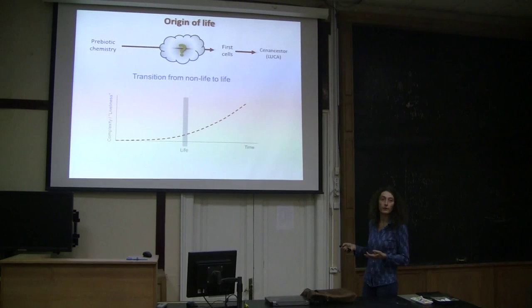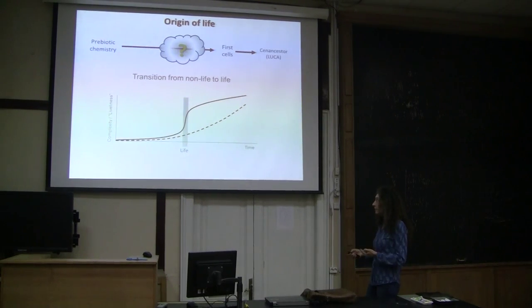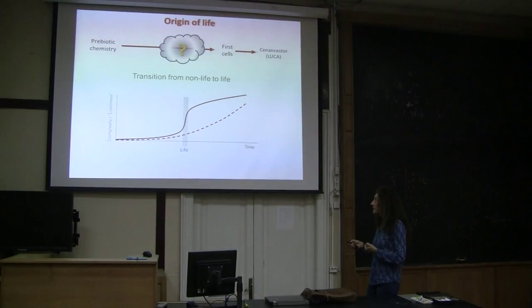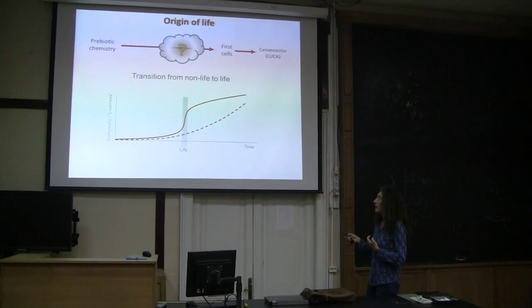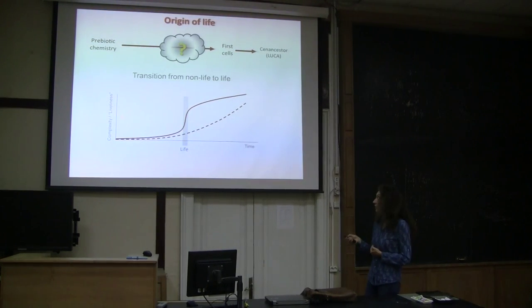And the other possibility is that at a given point, in this increase of complexity, there is really a transition point, and something happens to make the system have an emergent property, and this is life. So this would be a definition of life that is somehow independent of convention. There is really a transition state. We don't know, we don't have the answer, so this is a completely open question.